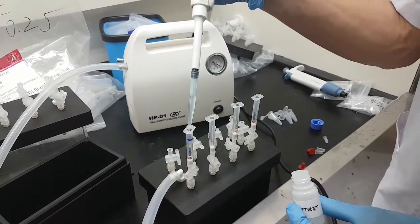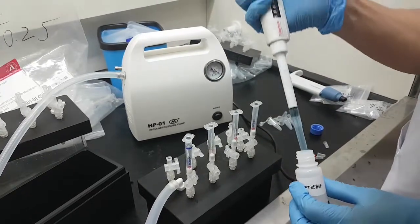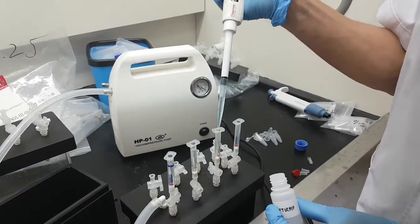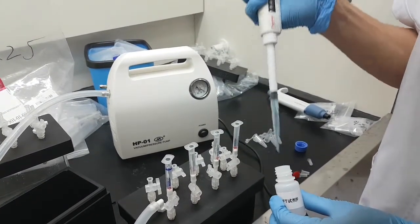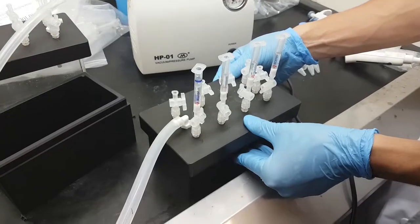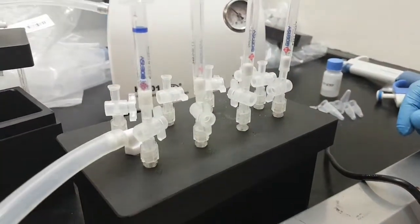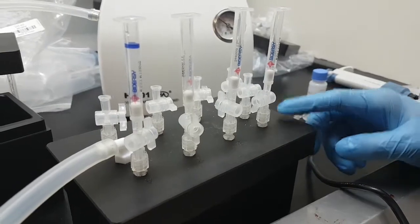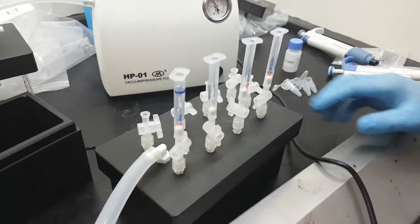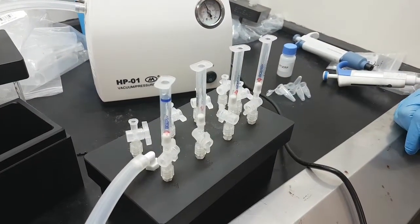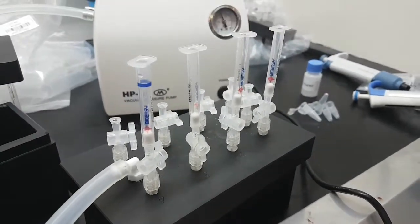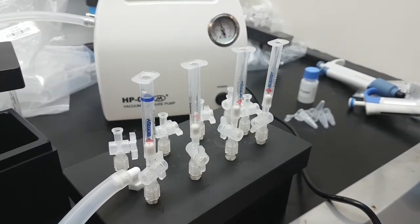Now we will put reagent F to the extraction columns, one milliliter of reagent F. Turn on the vacuum pump and let the liquid flow. Wait for 5 seconds, for extra 5 seconds after the whole liquid was flown through the extraction column.